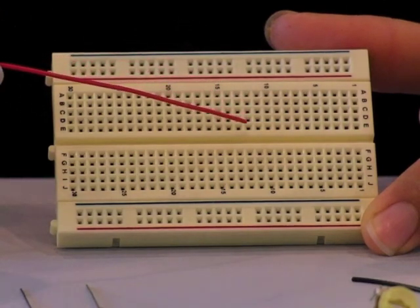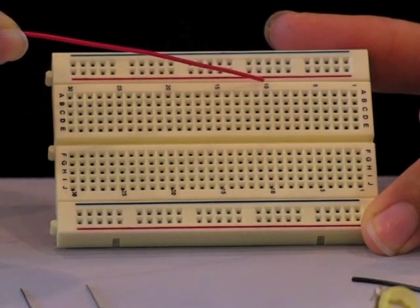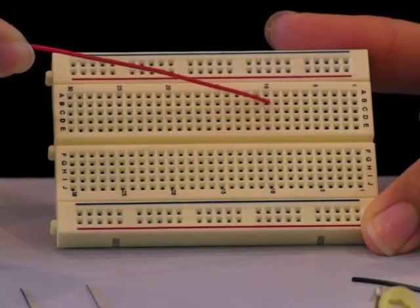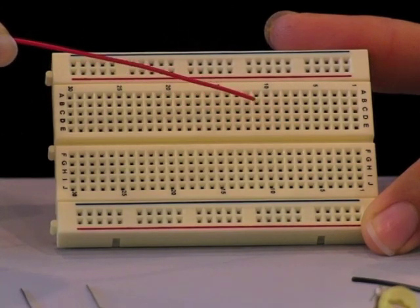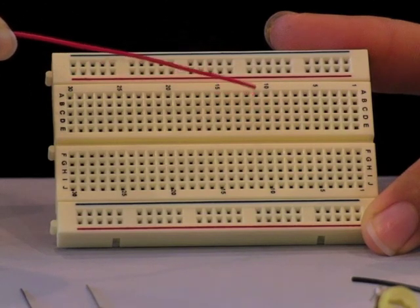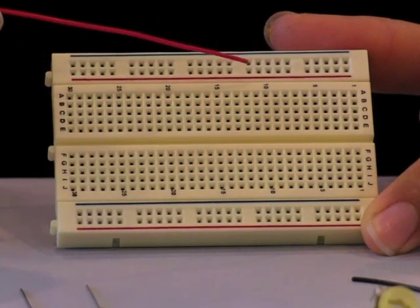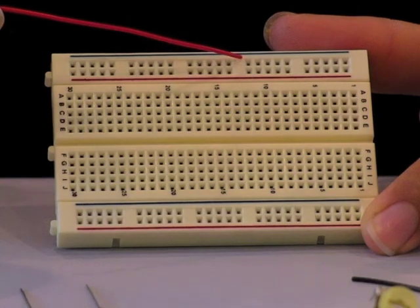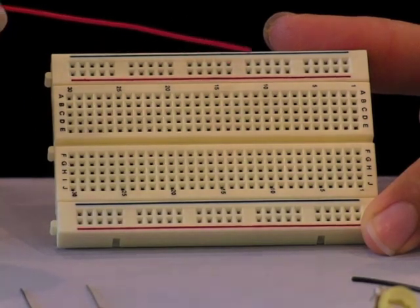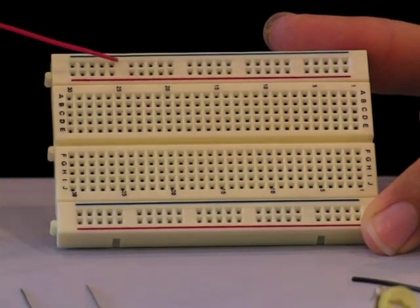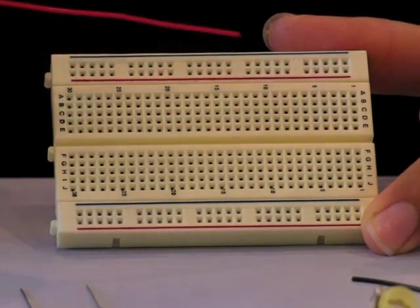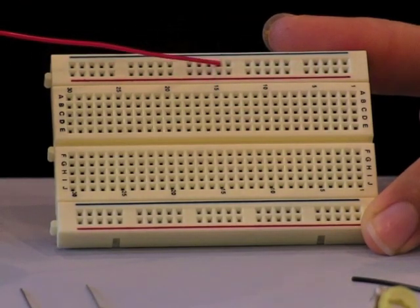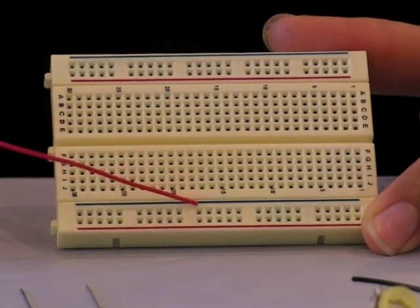To know how your breadboard works on the inside, each of the rows are connected together electrically by metal strips but there are no connections between rows or between each half of the breadboard. For your red and blue columns, each of the holes for the blue column are electrically connected and likewise for the red column, but there is no connection between columns.